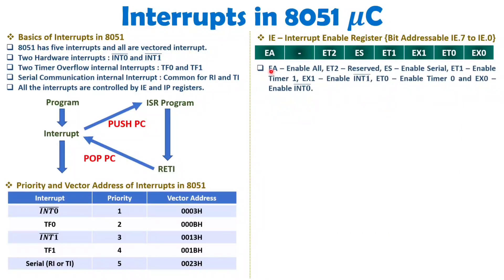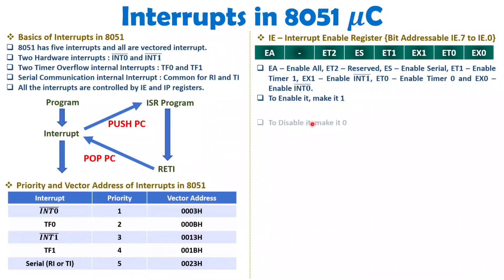To summarize the IE register: EA enables all interrupts; ET2 is reserved; ES enables serial; ET1 enables timer 1; EX1 enables external interrupt INT1; ET0 enables timer 0; EX0 enables external INT0. Setting a bit to 1 enables the corresponding interrupt; setting it to 0 disables it. When EA is set to 1, all interrupts are enabled regardless of other bits.